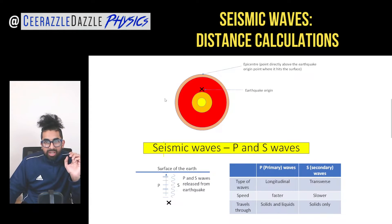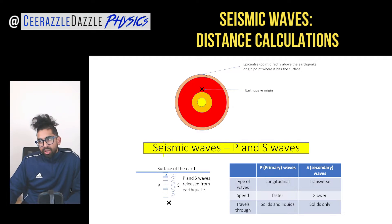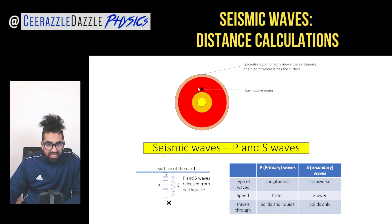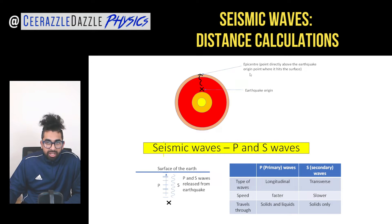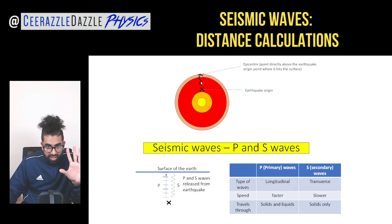Seismic waves are simply waves created from earthquakes. Over here we have the structure of the earth — let's say this is the earthquake origin. We know that the waves travel outwards and can hit the earth's surface. The epicenter is the point directly above the earthquake; it's the origin point where the wave hits the surface.